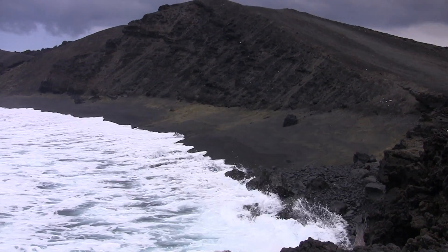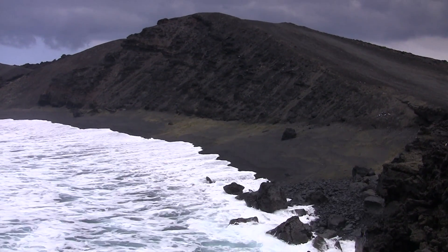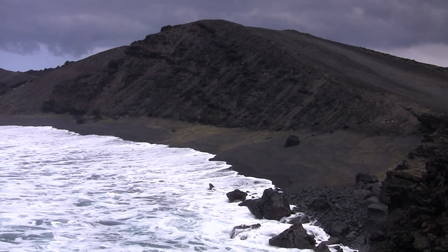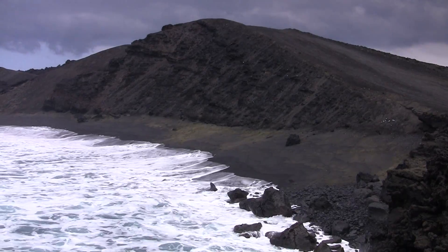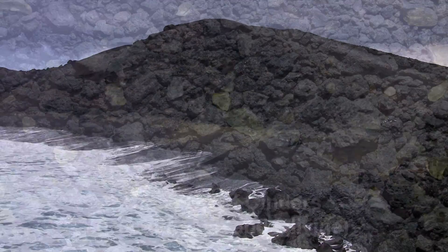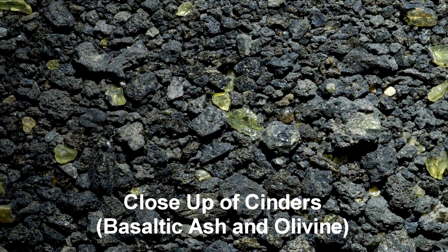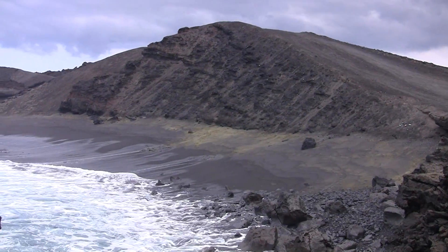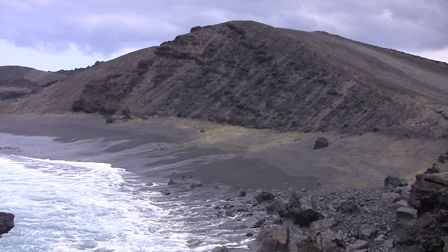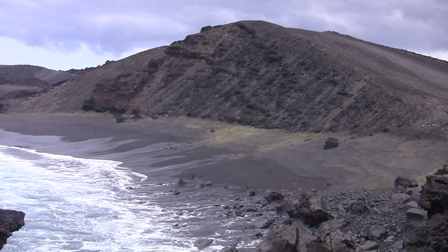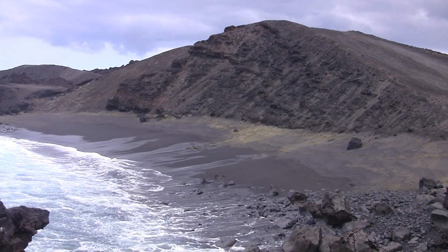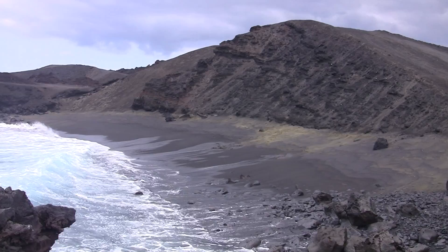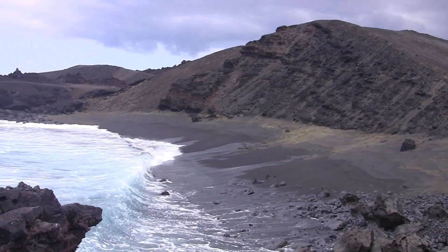This is the basaltic cinder cone in the process of being eroded by wave action. The cinder cone consists of unconsolidated cinders and is not as durable to the erosive action of the waves as the surrounding basalt flows. As a result, the cinder cone is being eroded back much faster.